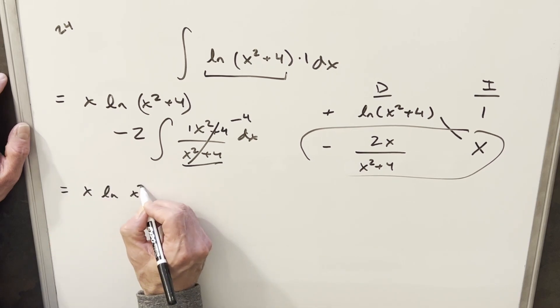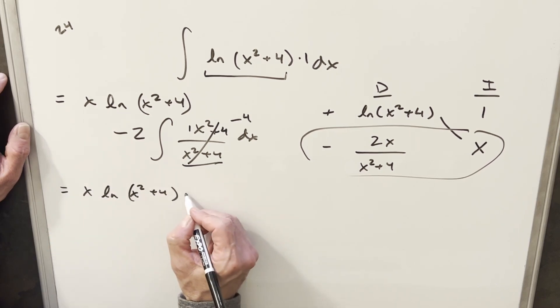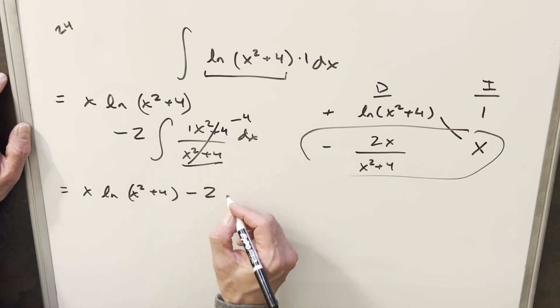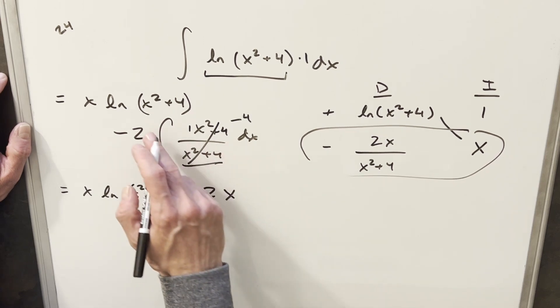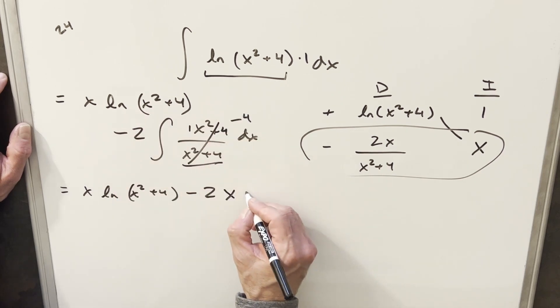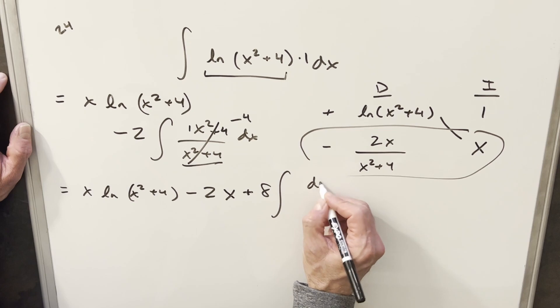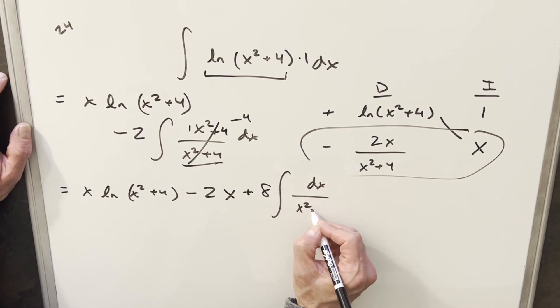So we're going to have x ln x squared plus 4, just copying this down. We have minus 2 the integral of 1. That's going to just give me an x. But then we're going to have one more integral here, distributing minus 2 to minus 4. I'm going to write this as plus 8 out front, but then for this last integral, we're going to have just dx over x squared plus 4.